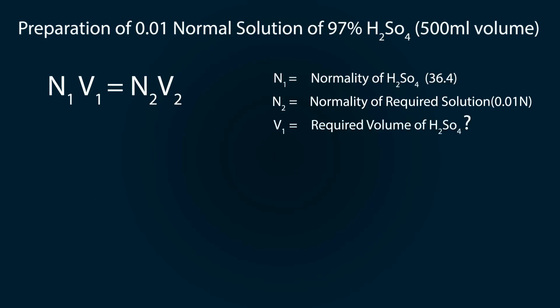V1 is the required volume of H2SO4 required to prepare 500ml volume, so we have V2 as 500ml, which is our final solution volume.